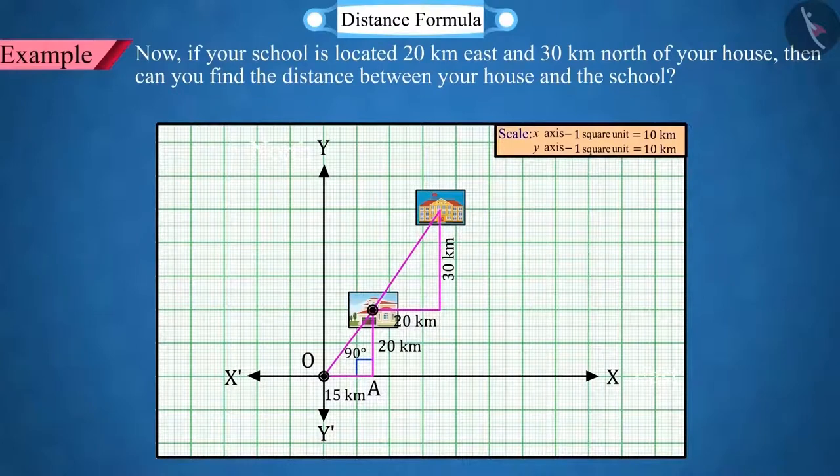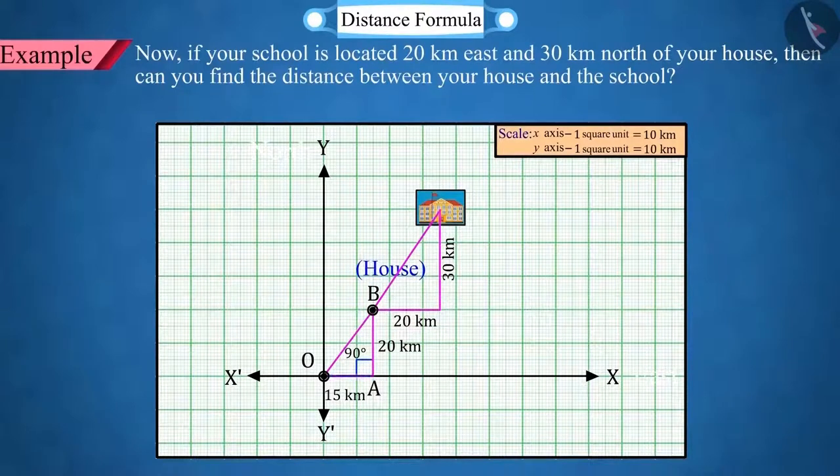As we have seen from the graph, the coordinates of the point B are 15 from the x-axis and 20 from the y-axis. Then, let's represent the coordinates of the point B, that is 15 as x1 and 20 as y1.